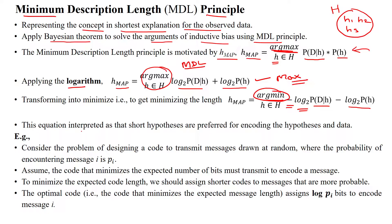This equation is interpreted as: the short hypothesis, i.e., the minimal description length, is preferred for encoding the hypothesis and the dataset.